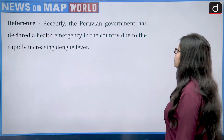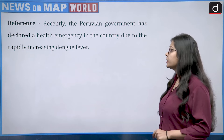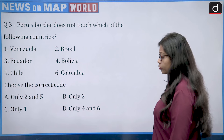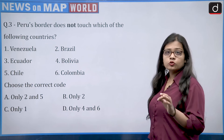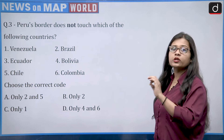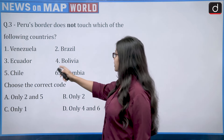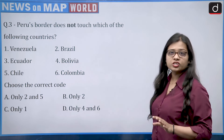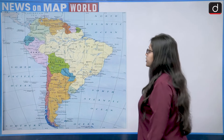The next reference is that the Peruvian government declared a health emergency due to rapidly increasing dengue fever. The question asks: Peru's border does not touch which of the following countries? The options are Venezuela, Brazil, Ecuador, Bolivia, Chile, and Colombia.